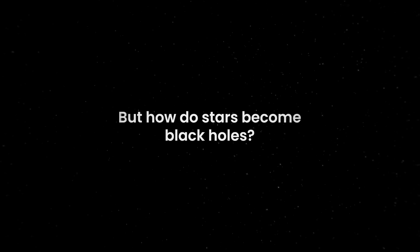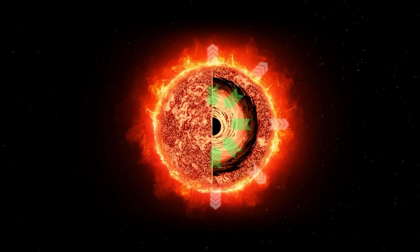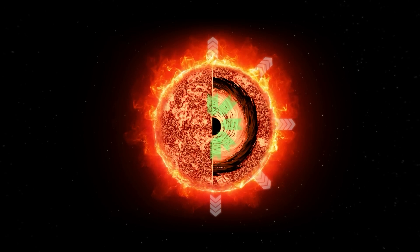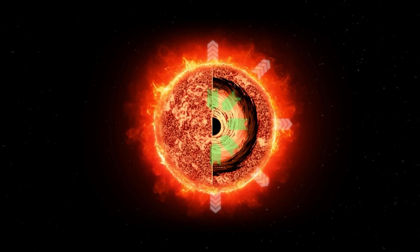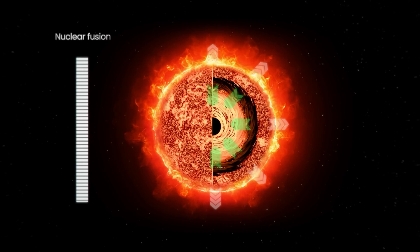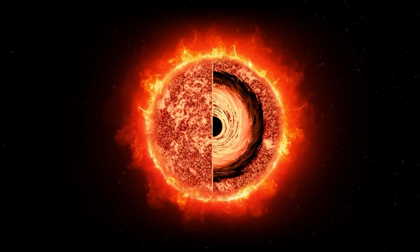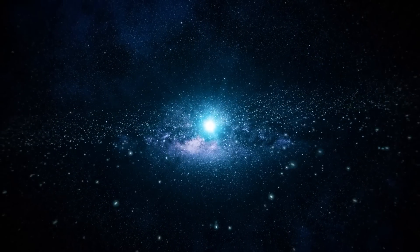But how do stars become black holes? While the star is still active, two prevailing forces work against each other: nuclear fusion and the intense gravity created by the star's own mass trying to squish it. Once there's no fuel left to power nuclear fusion, there's no longer a force to counter gravity, and the star collapses on itself, just like the controlled demolition of a concrete building.